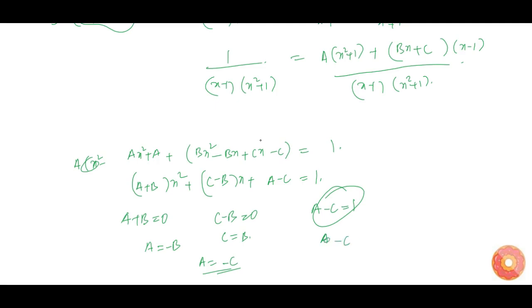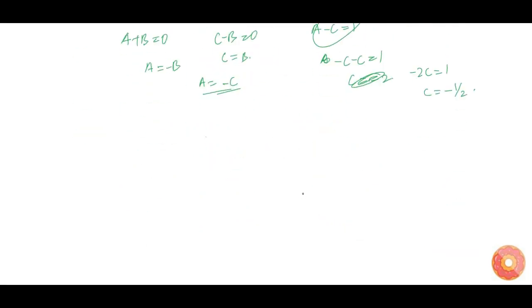Equating the constant term: A minus C equals 1. From the x squared term: A plus B equals 0, and from the x term: C minus B equals 0. Solving these, we get minus 2C equals 1, so C equals minus 1 by 2. Therefore B equals minus 1 by 2 and A equals 1 by 2.